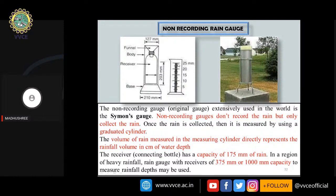If rainfall collected exceeds the 25 mm measuring jar capacity, pour 25 mm into the jar, transfer to another cylinder, then measure the remaining amount and add both readings for total rainfall. For heavy rainfall regions, rain gauge receivers of 375 mm to 1000 mm capacity are used.